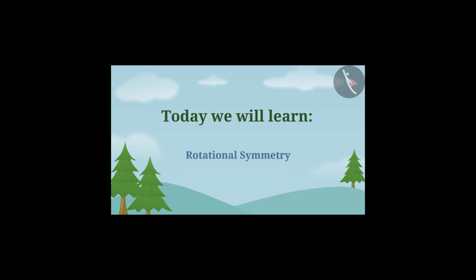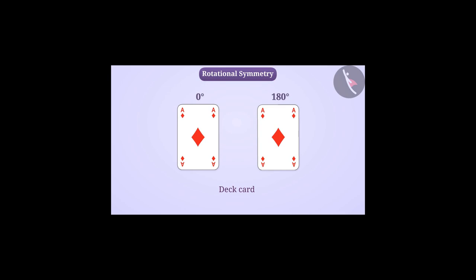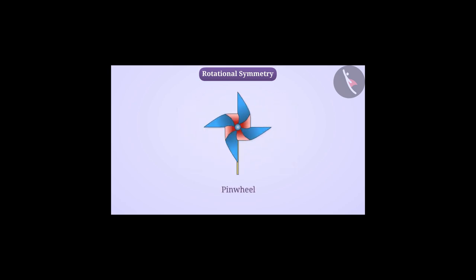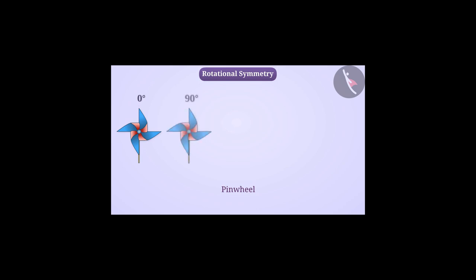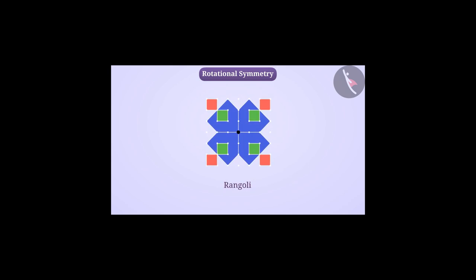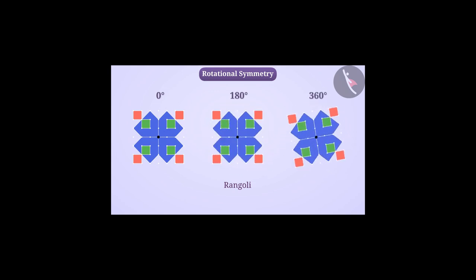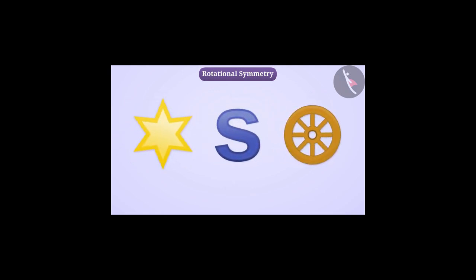Today we will learn Rotational Symmetry. Look at this deck card. What if we rotate it around the centre for 180 degrees? We will see it in the same state as before. You must have played with a pinwheel — if we rotate it around the centre too, in some situations we see it in the same state as before. Now see this picture of Rangoli. If we rotate it around the centre, in some situations we see it in the same state as before. There are many such shapes which, when rotated, look exactly the same as before.